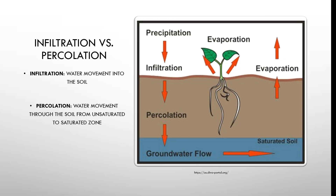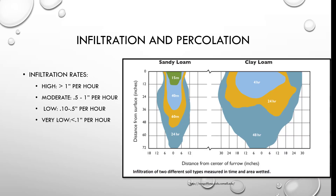Infiltration versus percolation: infiltration is the water movement into the soil. Percolation is the water movement through the soil from the unsaturated to saturated zones. High infiltration rates would be one inch per hour, and very low would be 0.1 inches per hour.